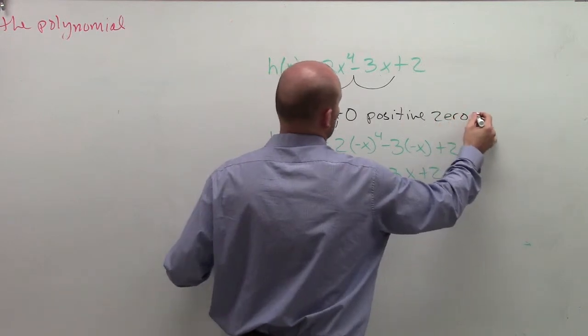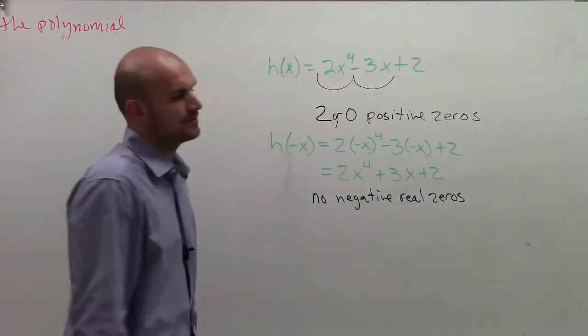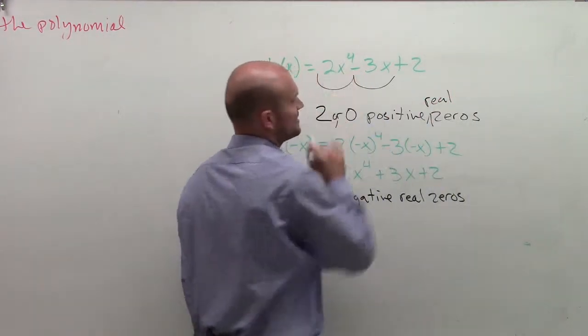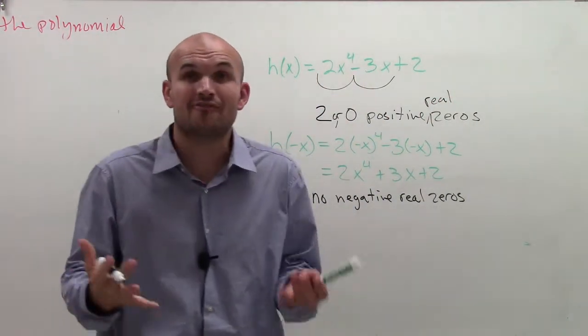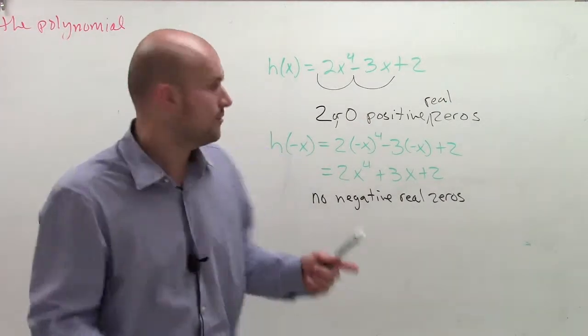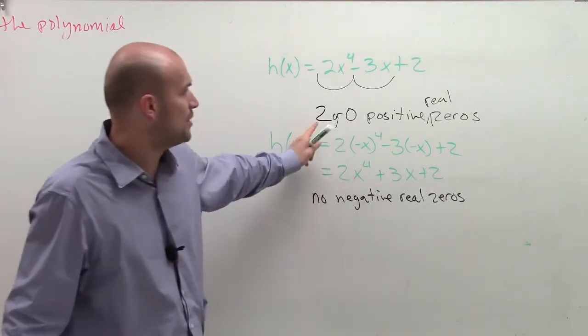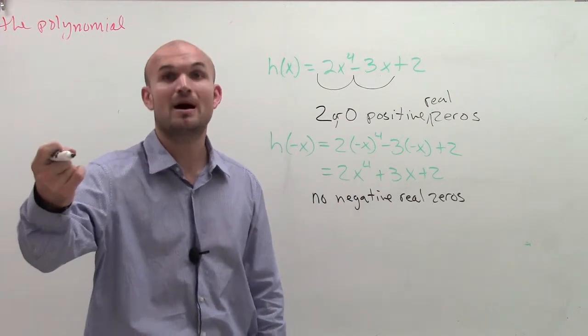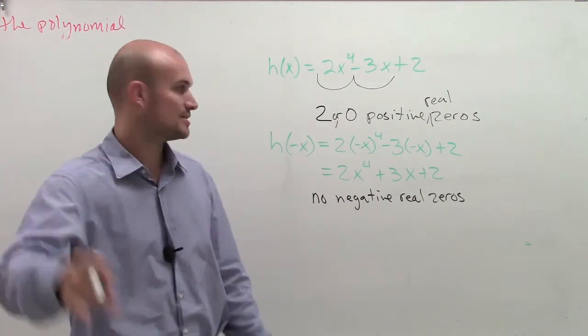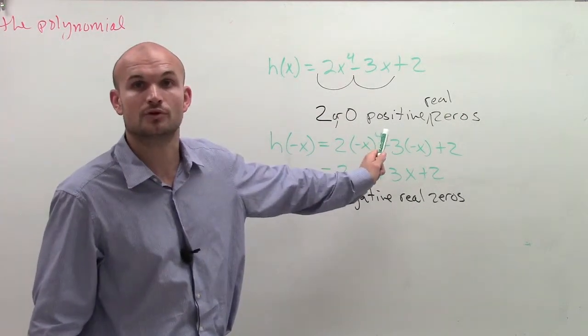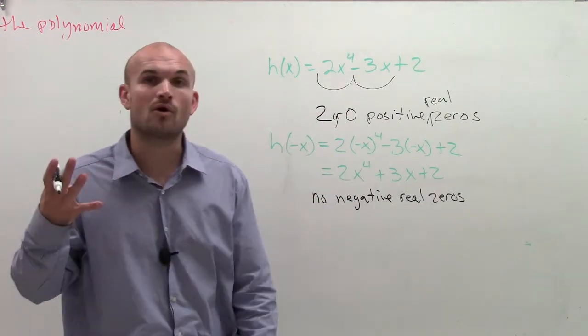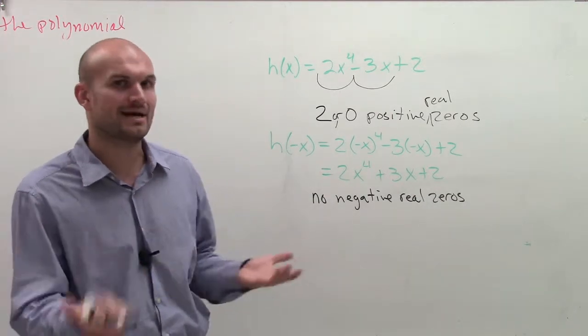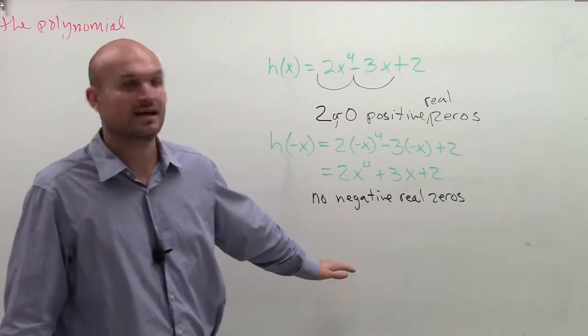So just to reiterate, real zeros. Notice that this is to the fourth power, so therefore we have four complex zeros. Well, if it's only possible at most to have two positive, that means I either have two positive real and two complex zeros, or I have zero real roots and I have four imaginary roots. So that's the way it kind of works and that's why it helps us out. We obviously know that there's going to be no negative numbers.